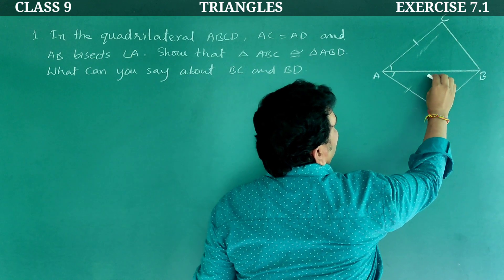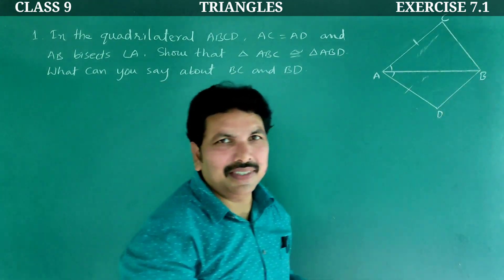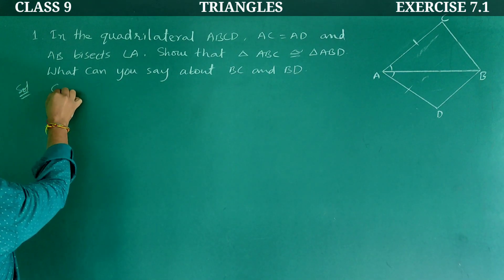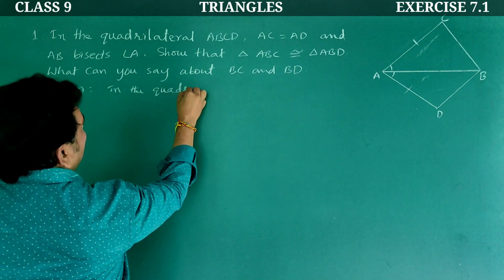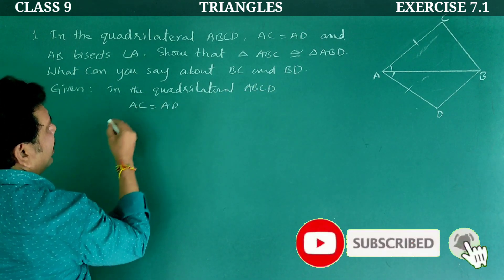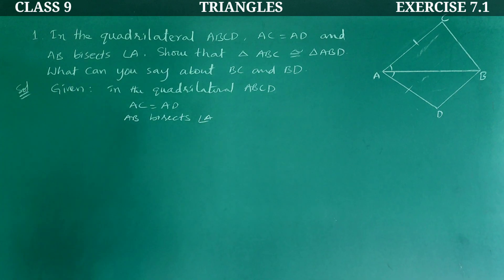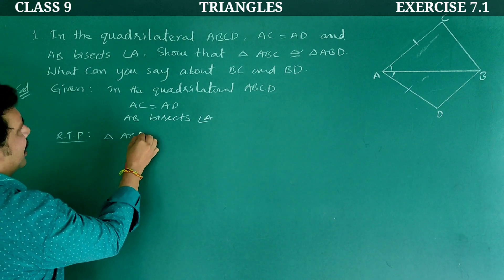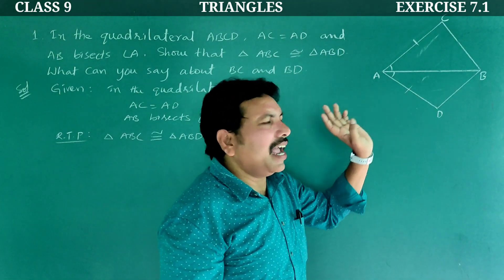Triangle ABC is congruent to triangle ABD. What can you say about BC and BD? Yes, let us prove. Solution: what is given? In the quadrilateral ABCD, AC is equal to AD — as given — and AB bisects angle A. Required to prove: triangle ABC is congruent to triangle ABD.